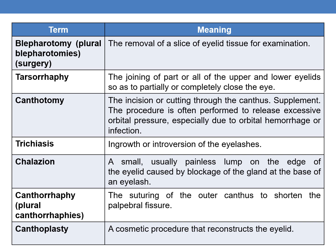The next term is trichiasis. It is a condition where ingrowth or introversion of the eyelashes takes place. The next term is chalazion. It is a small, usually painless lump on the edge of the eyelid caused by blockage of the gland at the base of an eyelash.